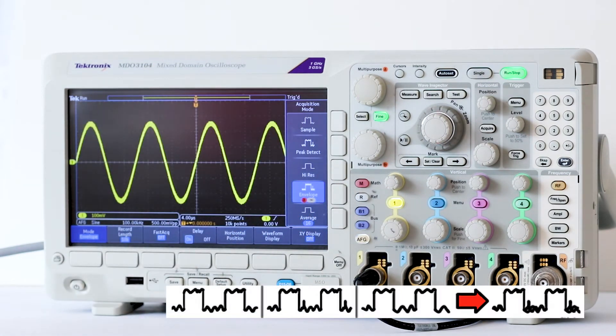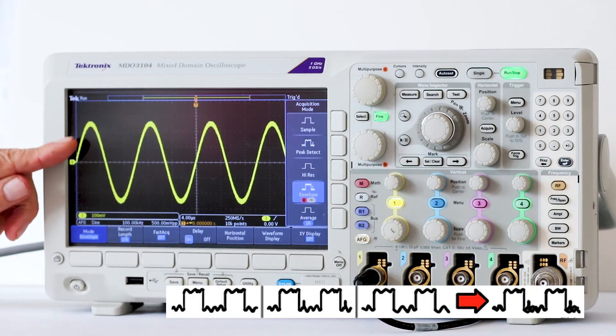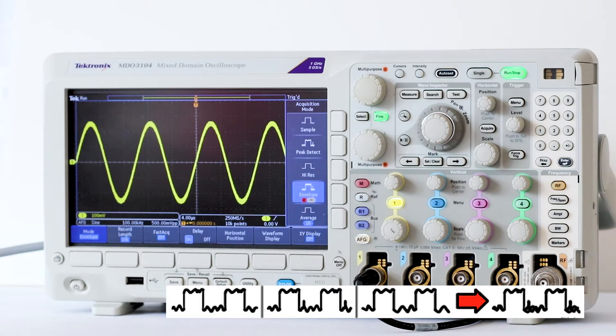In envelope mode, the trace becomes much thicker. It finds the highest and lowest record points over all acquisitions. Envelope mode uses peak detect for each individual acquisition.